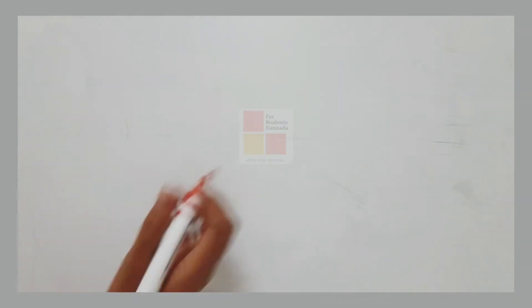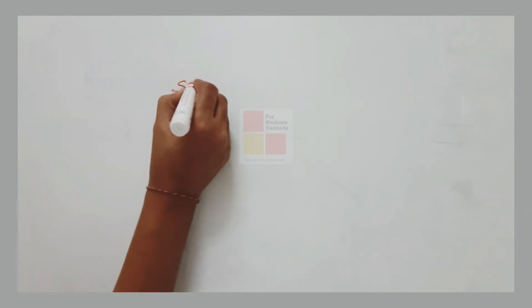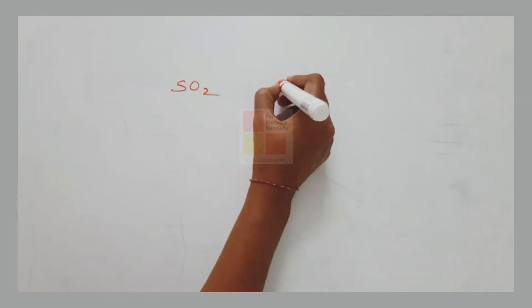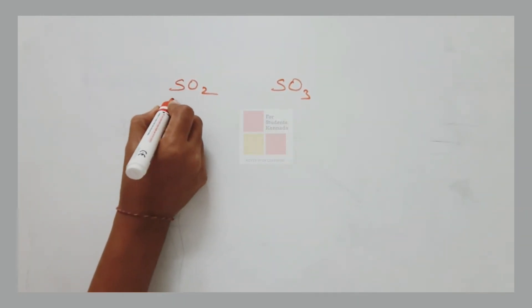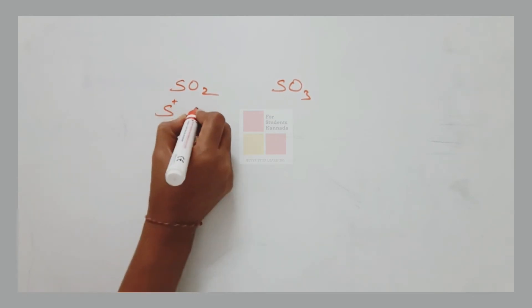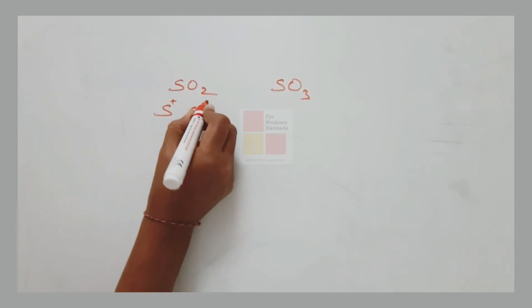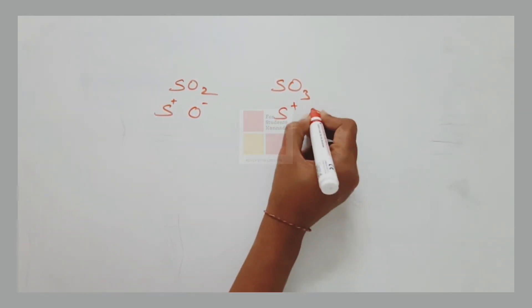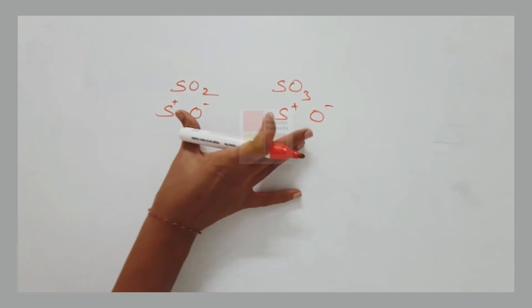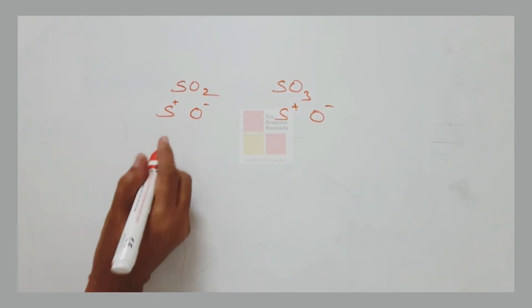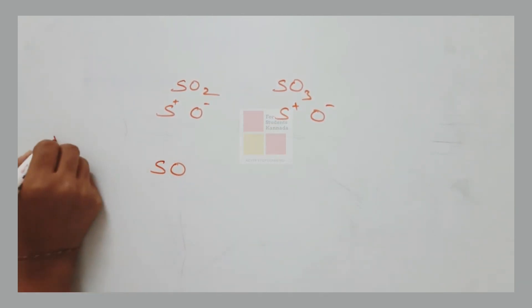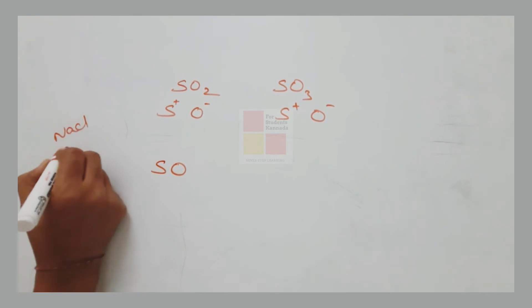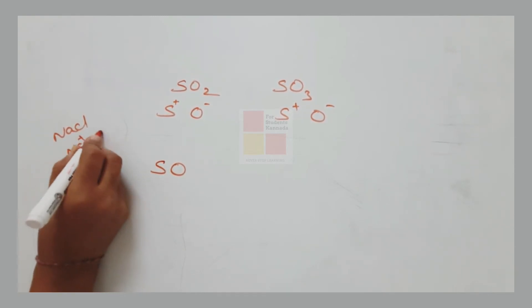Now let us calculate an example. We will add S²⁺ and S²⁻ — for example, SO2. Consider NaCl here with Na⁺ and Cl⁻.